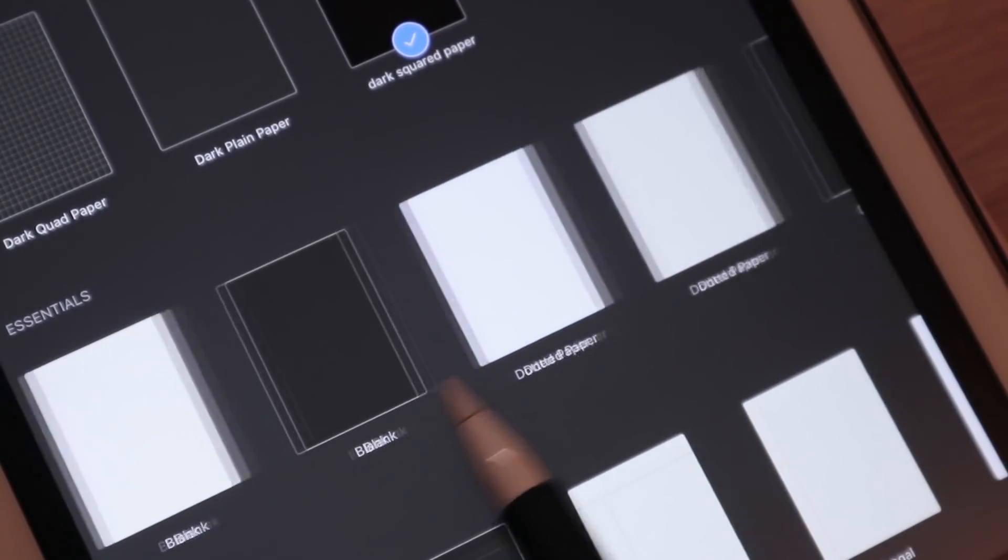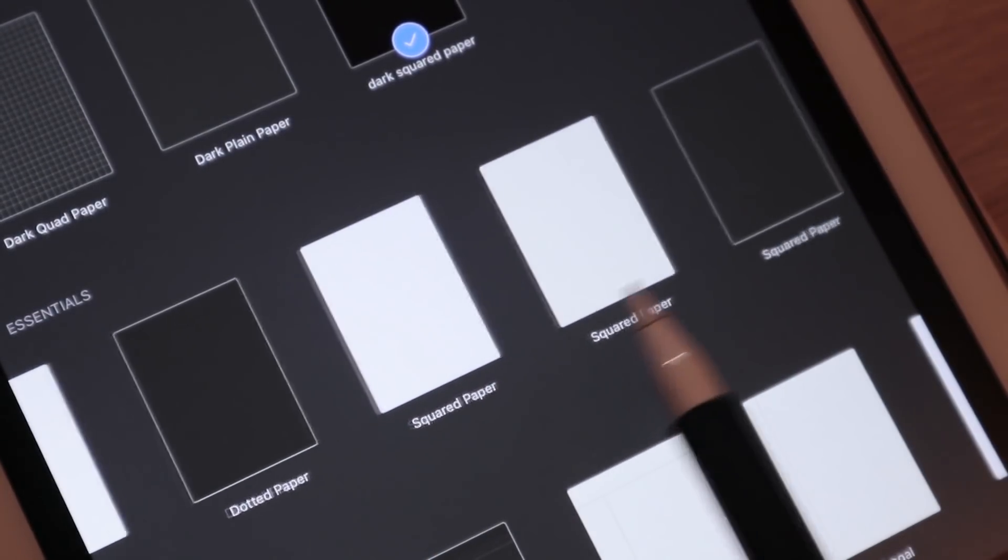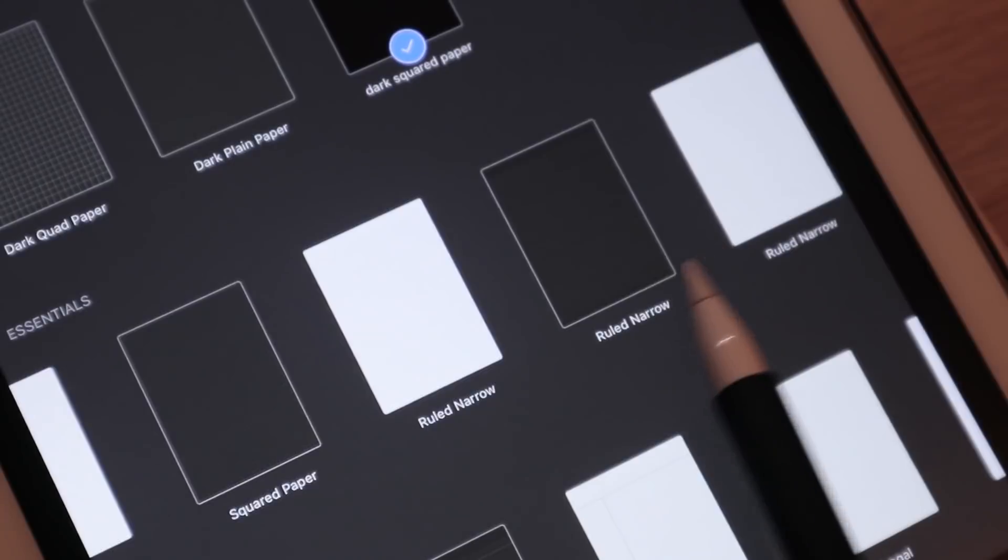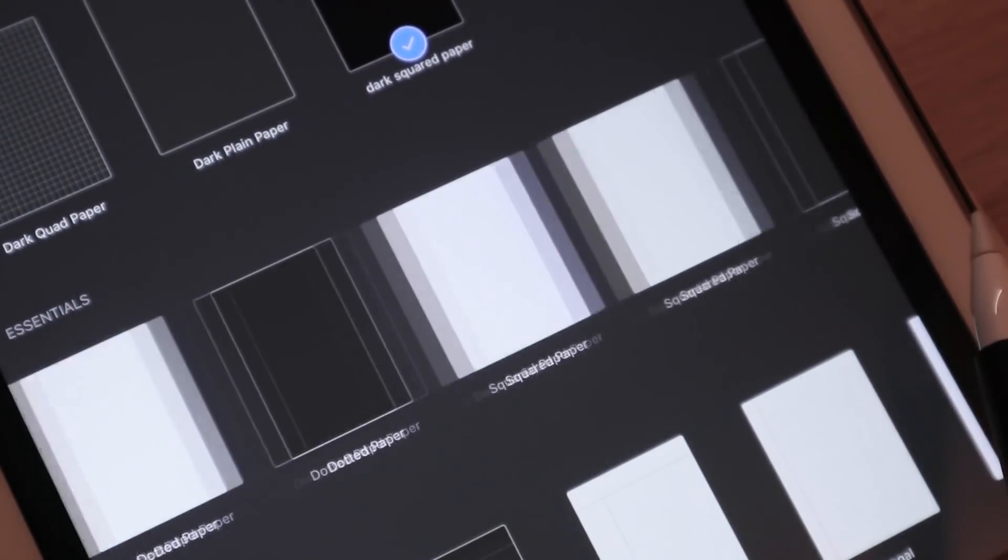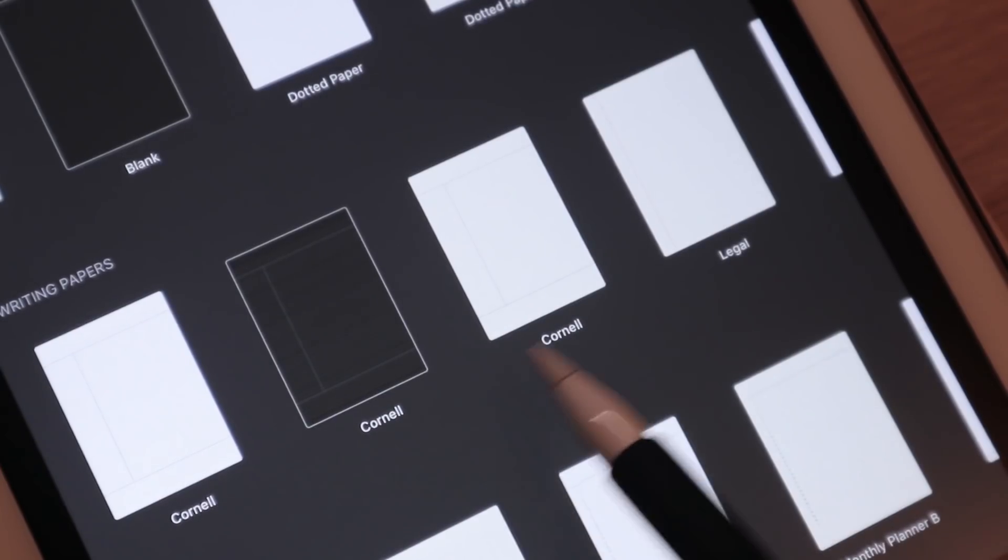With that said, GoodNotes does already come with lots of templates. So they have plain, dotted, squared. They also have ones that are specifically for the Cornell method, which I will be talking about later in this video.